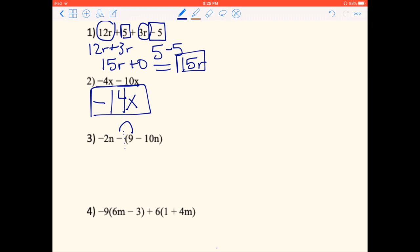So negative 1 times 9 and negative 1 times negative 10. I'm going to rewrite this equation: negative 2N, and then negative 1 times 9 gives us negative 9, and then negative 1 times negative 10N gives us positive 10N. So again, we're just distributing there, and whenever we have just a negative in front of parentheses, always add that invisible 1.